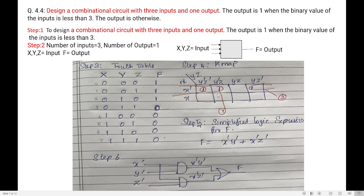Step 5 is to write a simplified logic expression for output F. For group 1, the common terms are X-bar (horizontally) and Y-bar (vertically), so group 1 gives X-bar · Y-bar. For group 2, horizontally it is X-bar, and vertically Z-bar is common between Y-bar Z-bar and Y Z-bar, so group 2 gives X-bar · Z-bar. The simplified expression is F = X-bar · Y-bar + X-bar · Z-bar.